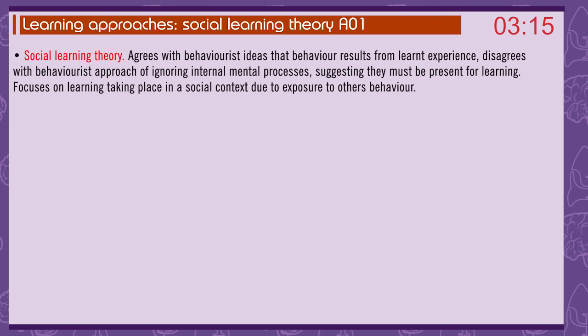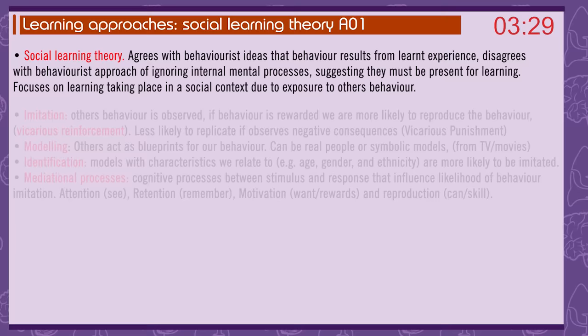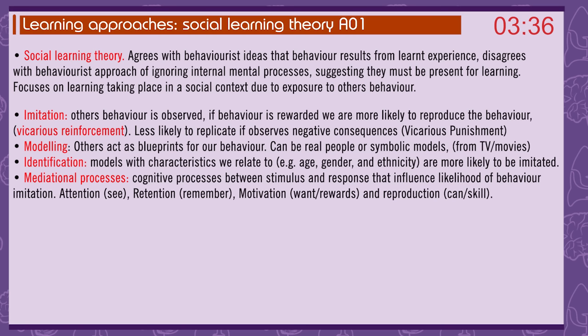Social learning theory agrees with behaviourist ideas that behaviour results from learned experience, but disagrees with ignoring internal mental processes, suggesting they must be present for learning. It focuses on learning taking place in a social context due to exposure to others' behaviour. Imitation: others' behaviour is observed; if behaviour is rewarded, we are more likely to reproduce it — vicarious reinforcement — and less likely if we observe negative consequences — vicarious punishment.